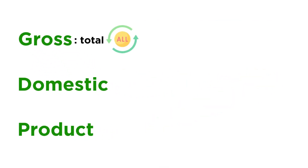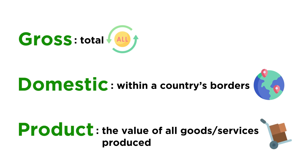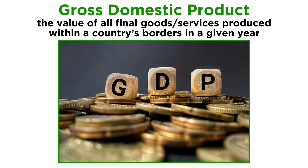Gross means total, domestic means within a country's borders, and product means the value of all goods and services produced. However, that's a bit of an oversimplification, so let's look at the complete definition. Gross domestic product is the value of all final goods and services produced within a country's borders in a given year.